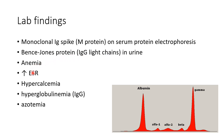There will be anemia. ESR will be elevated. There will be hypercalcemia. There will be hyperglobulinemia, especially immunoglobulin G. And there will be azotemia — that is, the urea and creatinine levels will be elevated.